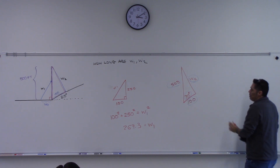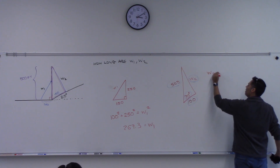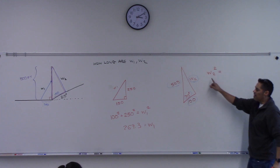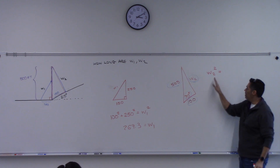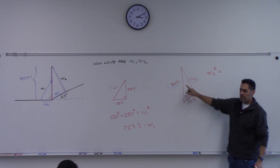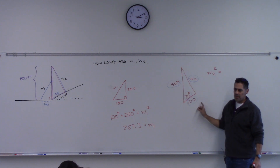Watch the way I write this. I'm going to write W2 squared equals — it's like I'm using the formula for a squared, b squared, c squared, but I'm going to call it W2 squared.